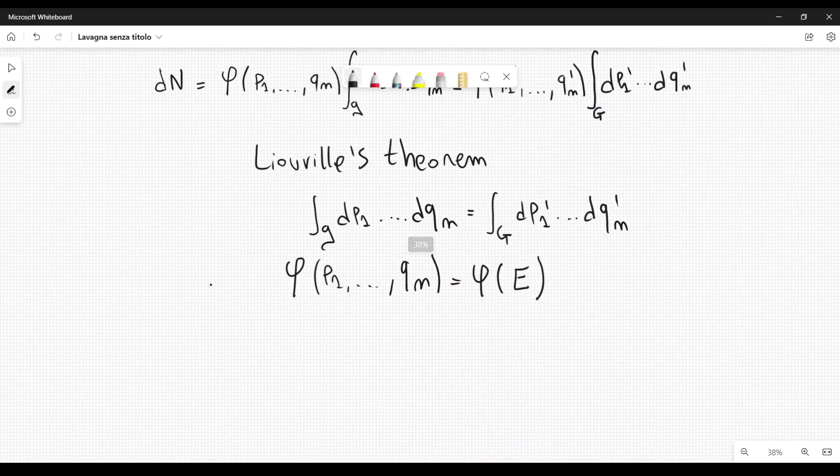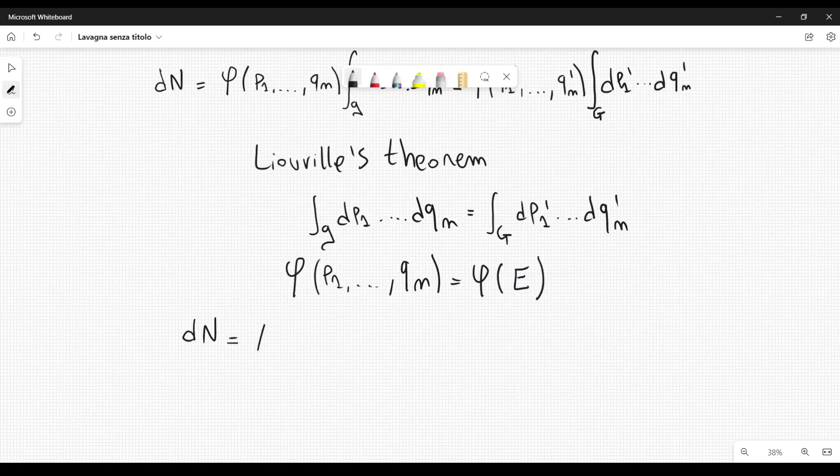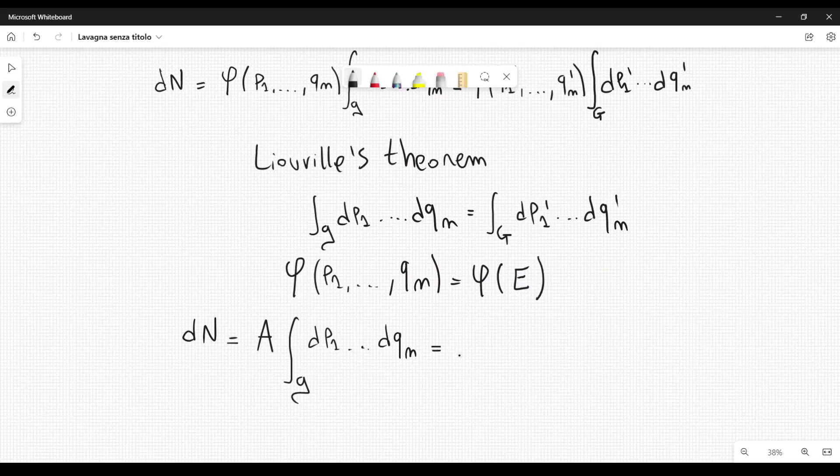Therefore Einstein rewrote dN like this: it is some constant with respect to the variables, A times the integral of dP1 dot dot dot dQn over g. And then he rewrote this as A prime, which is a different constant, times e to the minus 2HE where H is a constant. This is a very important constant, and Einstein described this constant in this paper. It is a very important constant which we will see that it is related to the Boltzmann constant. Then integral over g dP1 dot dot dot dQn.